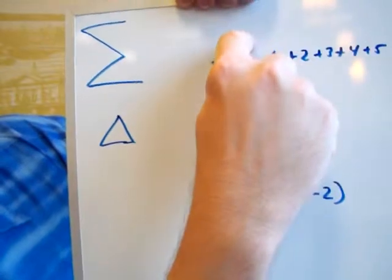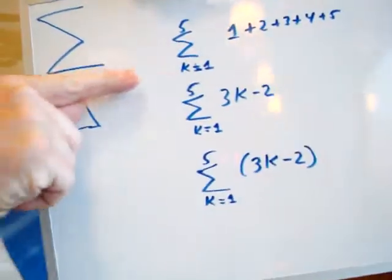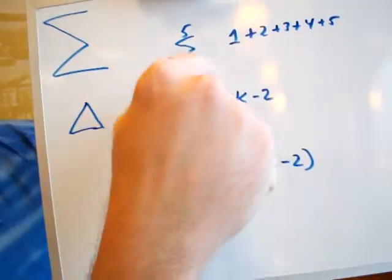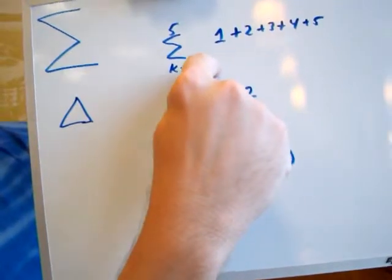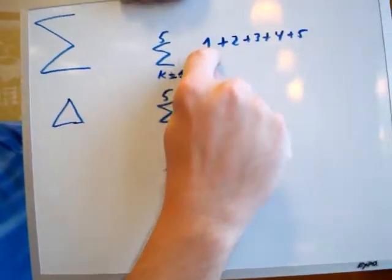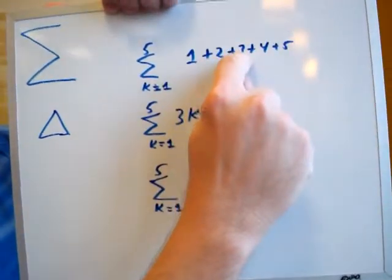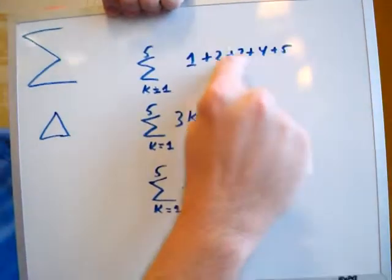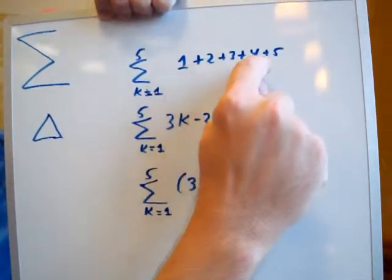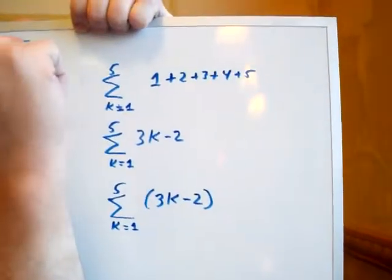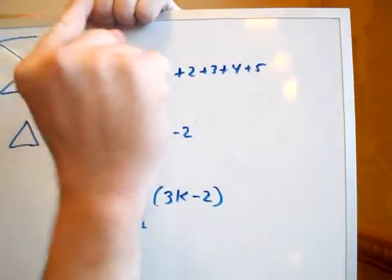All right now how does Sigma work? All right let's start this way. You have K equals 1 and you have a number 5 up here at the top. See how it says K equals 1 and 5 over here? Now what you're going to do is you're going to start with the number 1. You're going to have the number 1, the number 2, the number 3, the number 4, and the number 5. You're going to add 1, 2, 3, 4, and 5 and when you do you will get a total of 15.